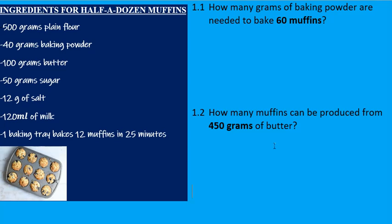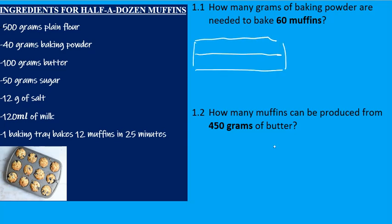When we convert ingredients, it's much easier to use the crisscross method. Basically, you just draw a table with four blocks, and then you'll be able to simplify for any unit.